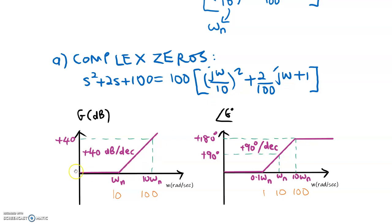For magnitude, the starting point is 0 dB. For frequency less than the cutoff frequency of 10, the slope is 0 dB per decade. For frequency greater than 10, the slope is positive 40 dB per decade. The slope is positive because it is zeros, and 40 instead of 20 because it has double zeros. So positive 40 dB per decade continues until the end of the frequency range.